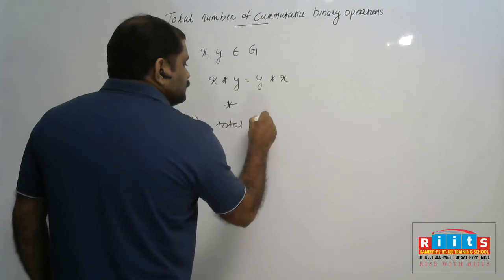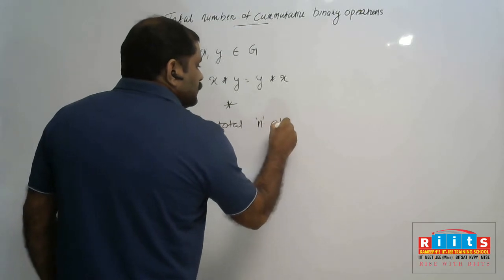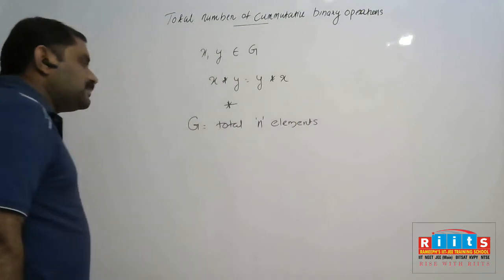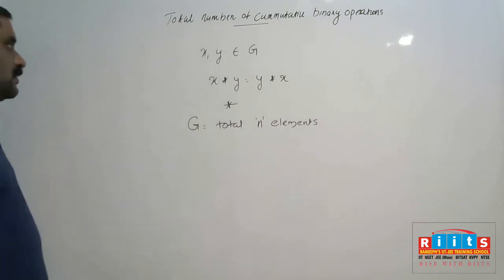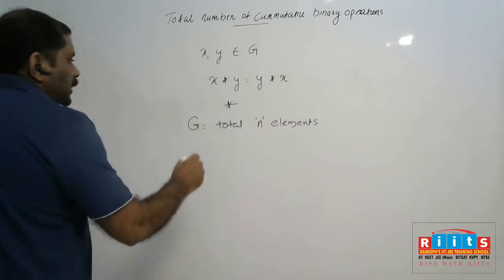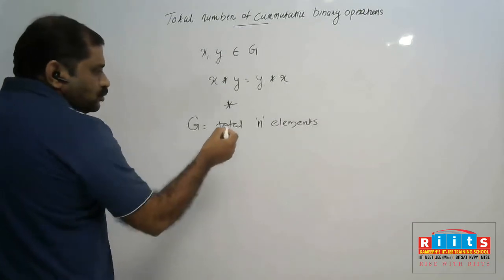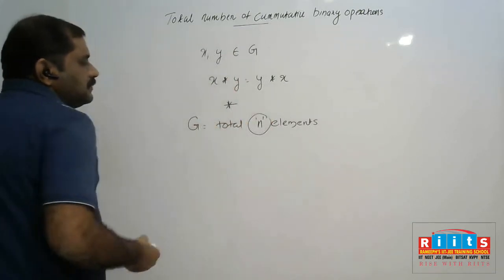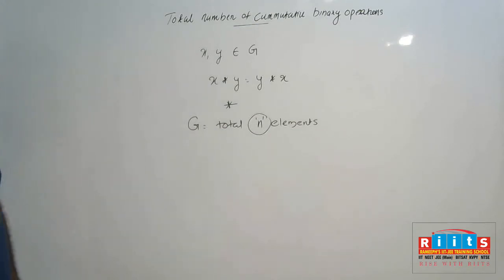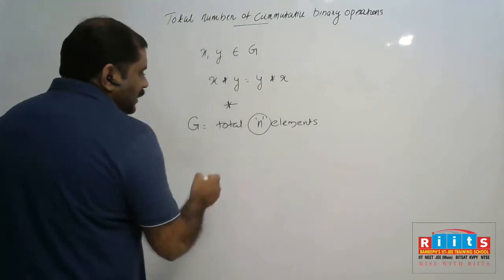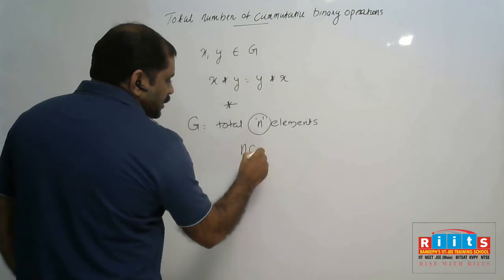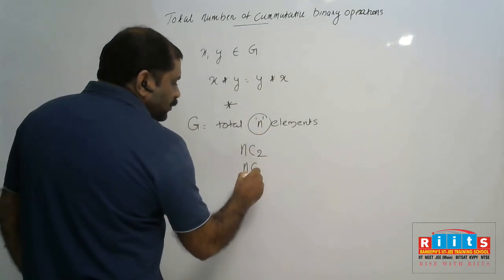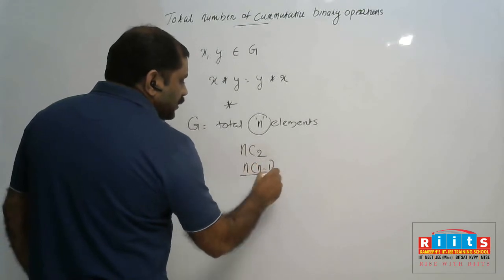Suppose a set G contains n elements total. We take two elements from those n elements. That can be done in nC2 different ways. nC2 equals n(n-1) divided by 1×2.